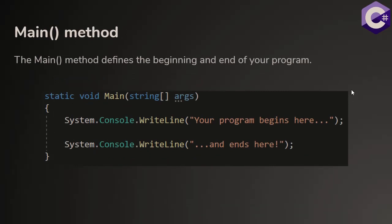The main method is a special method in our program because it defines the beginning and end of our program. Every program should have one main method. The main method begins at the opening curly brackets of the code block attached to the main method, and your application closes at the end of the curly brackets, at the end of the code block attached to your main method.